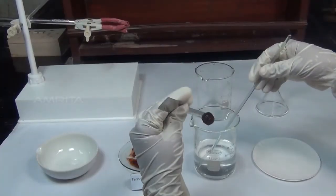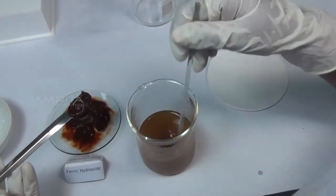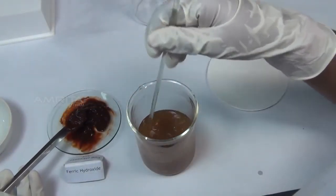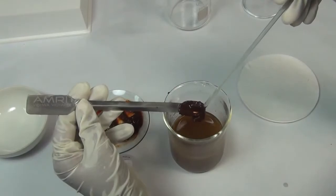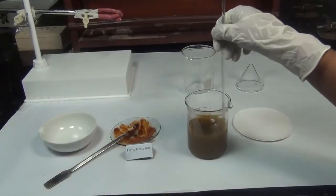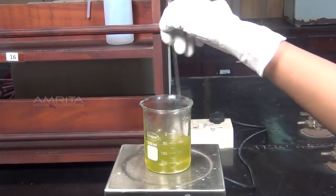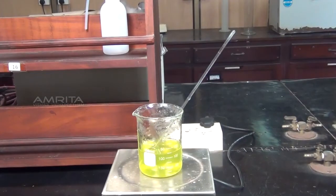Using a spatula, add freshly prepared ferric hydroxide precipitate in small proportions to the solution of potassium oxalate and oxalic acid with constant stirring to dissolve the precipitate. If the precipitate does not dissolve, then warm it and leave the contents for some time.